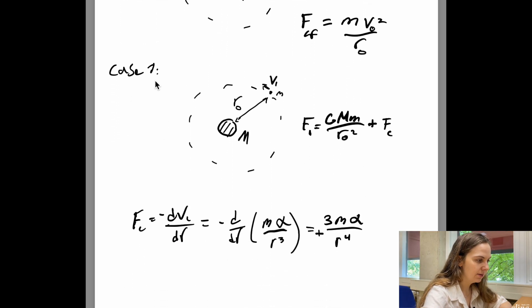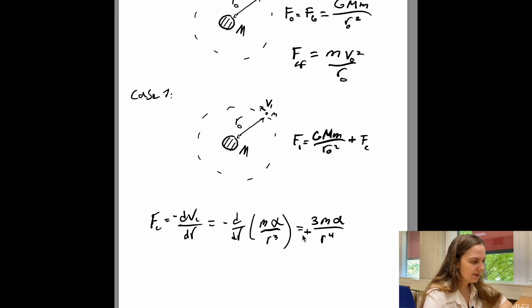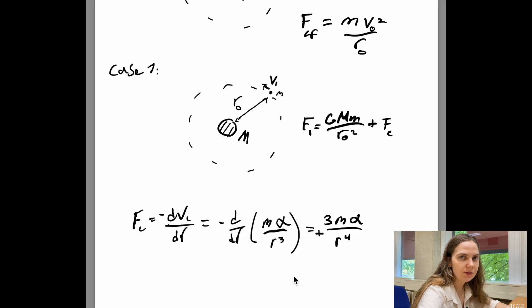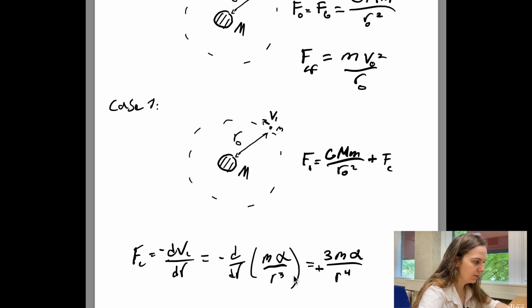So in the second case, which I call case one, we now have the gravitational force plus this additional force that we were given in the problem that I denote as Fc. And by definition this force is just minus the radial derivative of this potential Vc that we were given in the problem. So if we work out the radial derivative, we just get that this force Fc is equal to 3m times alpha over r to the power of 4. And the plus sign here just means that this force is directed outwards, so it's repulsive, meaning that it actually reduces the acceleration that we need to keep this particle in this circular orbit at r0.